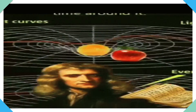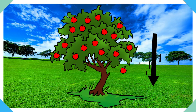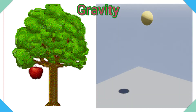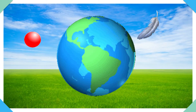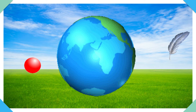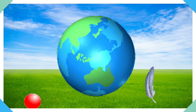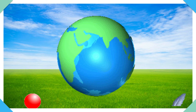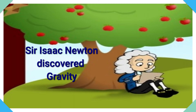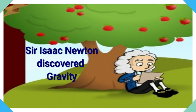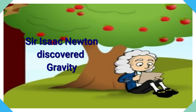he found that earth pulls everything down. Earth has a pulling force that is called gravity, which makes objects fall down. In this way, Sir Isaac Newton discovered gravity and determined that gravitational forces exist between all objects.